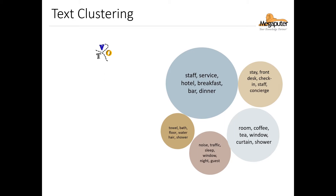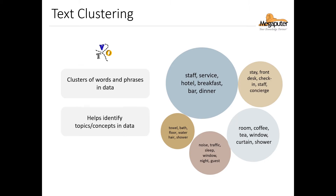The text clustering node in PolyAnalyst uses natural language processing and machine learning to identify clusters of words or phrases in the dataset. This is very useful when you're trying to explore unstructured text data because it helps us identify potential topics or categories that we can use in the analyst-driven analysis stage. It's also useful for classification by helping us organize text into a categorization schema.